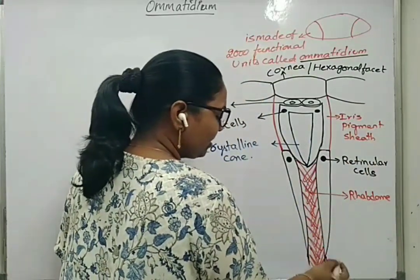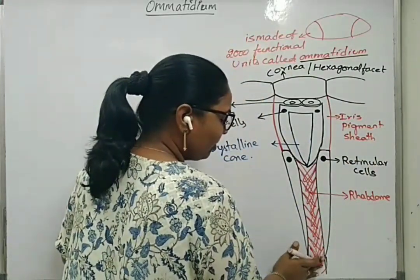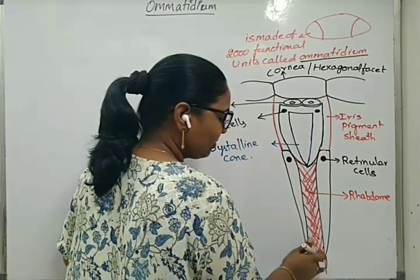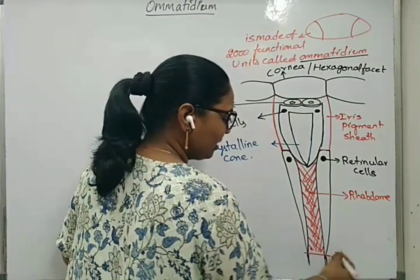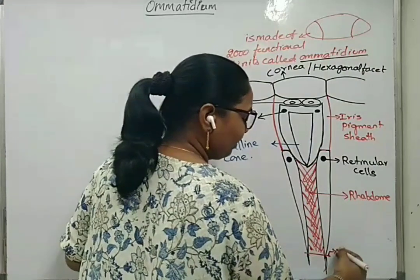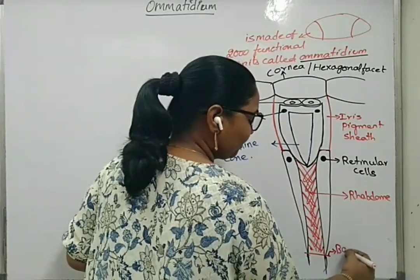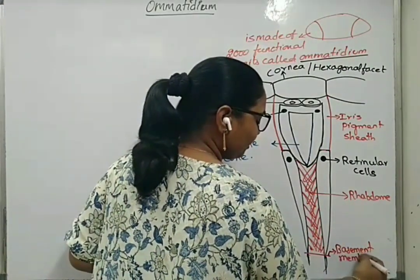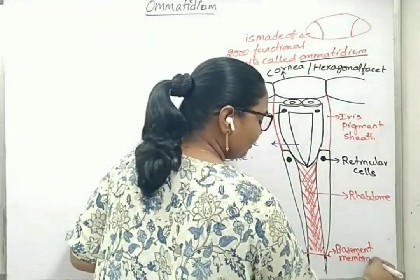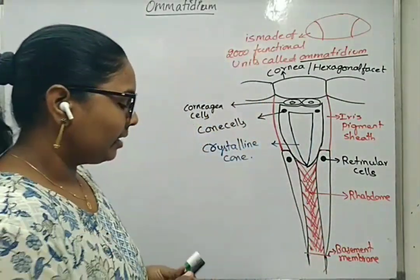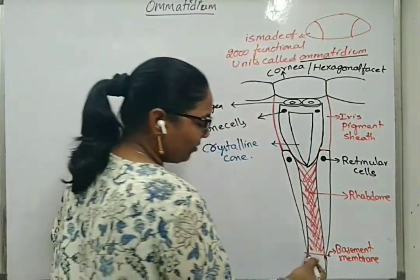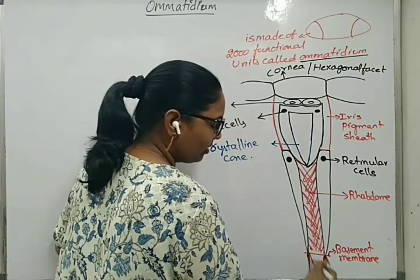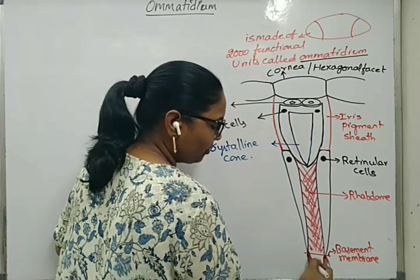These retinular cells lie on a special basement membrane. After the basement membrane, the retinular cells are extended as optic fibers or optic nerves.